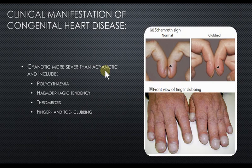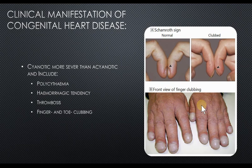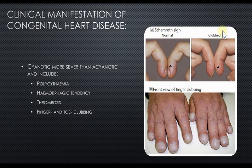Clinical manifestations more apparent in cyanotic congenital heart disease include polycythemia, hemorrhagic tendencies, and a risk for thrombosis. Finger and toe clubbing may also be evident. A simple test for clubbing is the Schamroth sign — the patient places their fingers together, and if there is a wide angle between the nail beds, the fingers are referred to as clubbed.